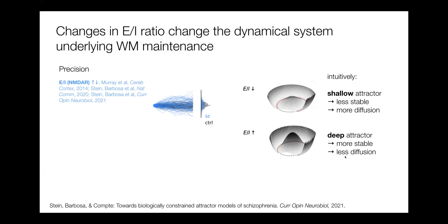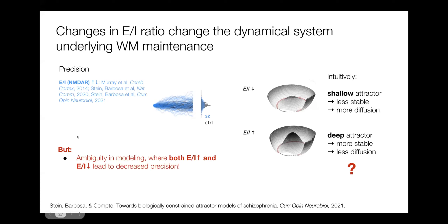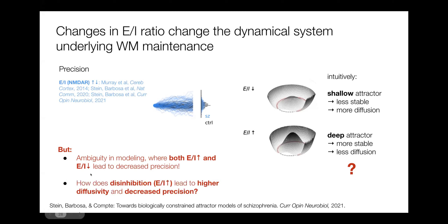Of course, the opposite would be true for deeper attractors. However, when we look back at studies that have implemented changes in E-to-I ratio, we see there is an ambiguity in modeling — both increasing and decreasing the E-to-I ratio has led to decreased precision in models of schizophrenia. How do we explain this, and specifically, how do we explain that disinhibition — an increase in excitation in the network — leads to higher diffusion and therefore decreased precision? I encountered this puzzle several times during my PhD, and when we wrote this review, we started digging into the literature.